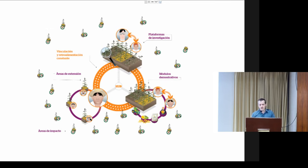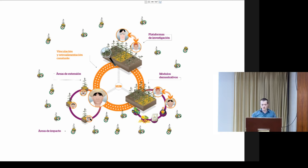That's why we are working with the hub concept. The hub concept — this is a theoretical depiction — exists in three components: research platforms, which are experimental trials; modules, which are side-by-side comparisons in farmers' fields; and extension areas, which are fields where innovative farmers are applying the technologies that we are promoting.